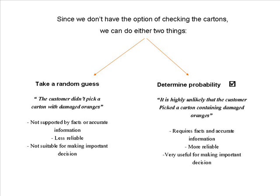Since we don't have the option of checking the cartons, we can do either of two things. We can take a random guess, but random guesses are not supported by facts and therefore are less reliable and not suitable for making important decisions. We also have the option of determining the probability, which requires us to have the facts, making it more reliable and therefore suitable for making important decisions.